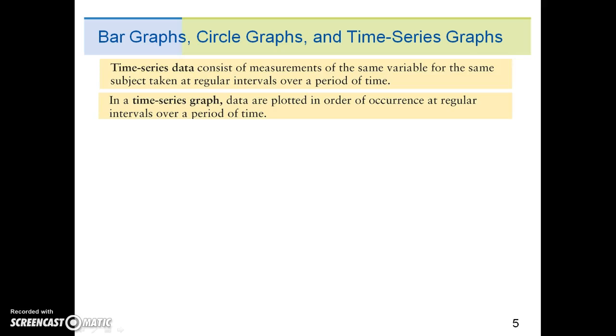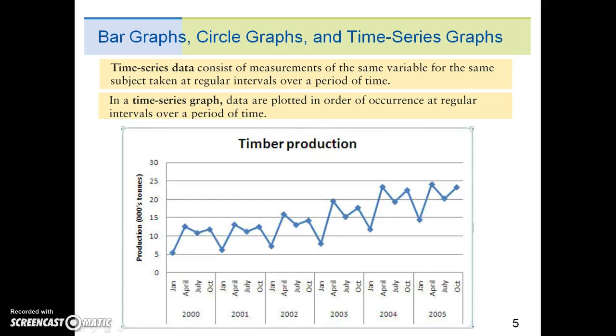Time series data consists of measurements of the same variable for the same subject taken at regular intervals over a period of time. In a time series graph, data are plotted in order of occurrence at regular intervals over a period of time. This example shows a time series graph for timber production. We can see that the production in general increases over time.